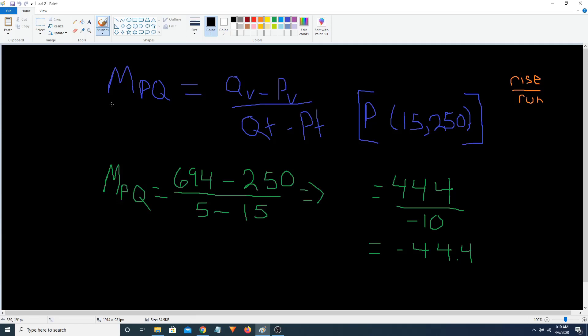We're trying to find the slopes of the secant lines to approximate the slope of the tangent line. Our equation is read as following: qv minus pv divided by qt minus pt. And so v stands for the volume, and t stands for time.